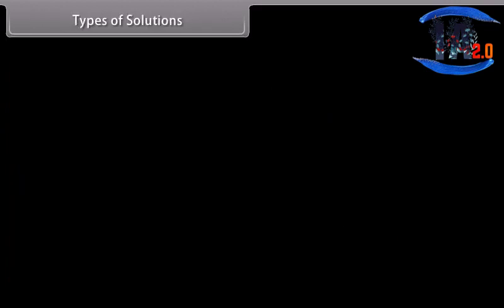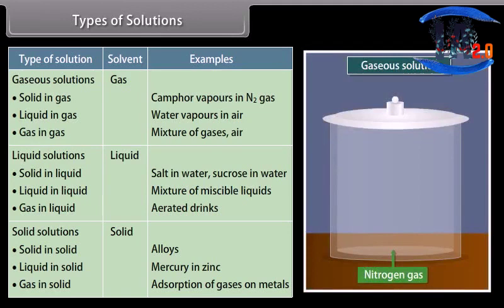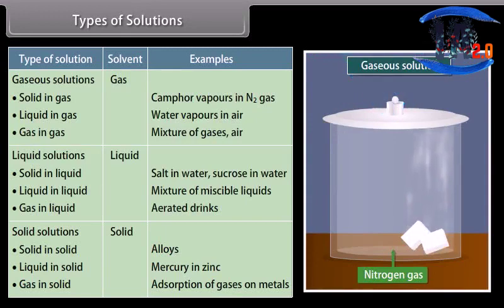In a binary solution, components can be either solid, liquid, or gas. There are three types of solutions: gaseous solutions, liquid solutions, and solid solutions. In gaseous solutions, gas is the solvent. They are categorized as: solid in gas, for example camphor vapor in nitrogen gas; liquid in gas, for example water vapors in air; and gas in gas, for example mixture of gases or air.